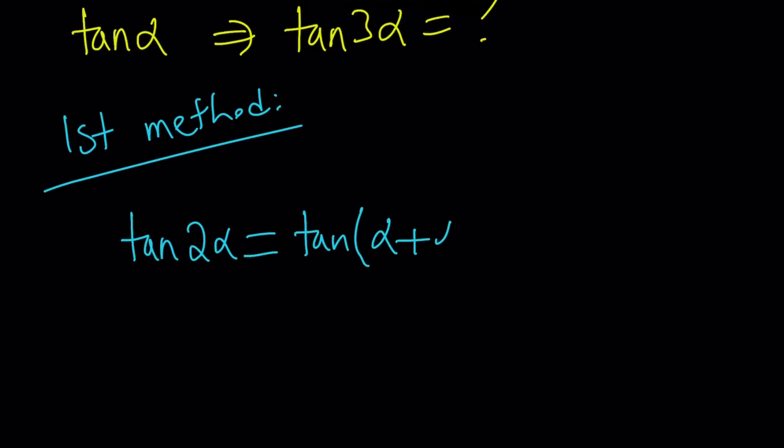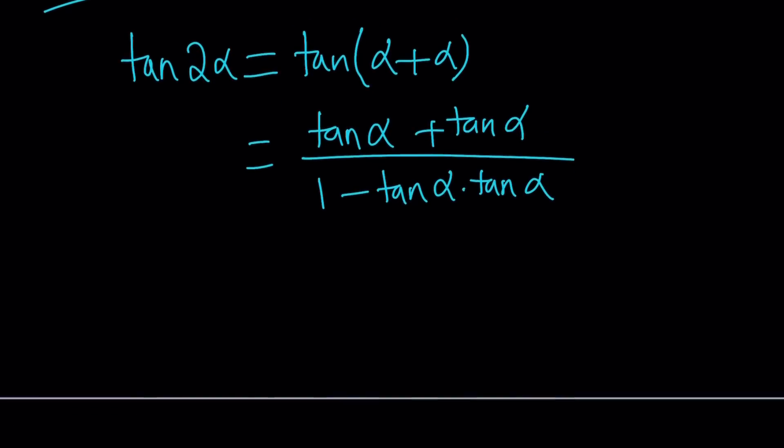Hopefully, you do know the formula for tangent alpha plus beta, which is tangent alpha plus tangent beta. In this case, beta is also alpha. So I'm going to replace it with alpha divided by one minus tangent alpha tangent beta. But that's going to be tangent alpha tangent alpha. Make sense? That's the double angle formula. You should memorize this definitely. Don't try to come up with the formula every time. That's time consuming. Two tangent alpha over one minus tangent squared alpha. That's our double angle formula.